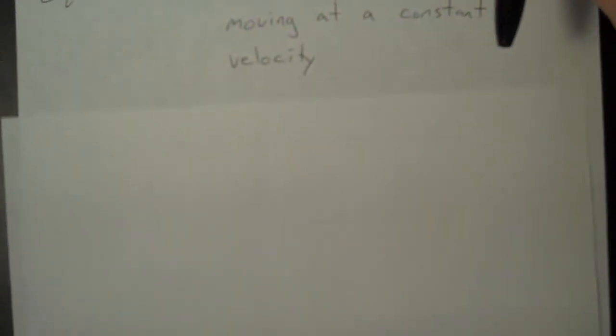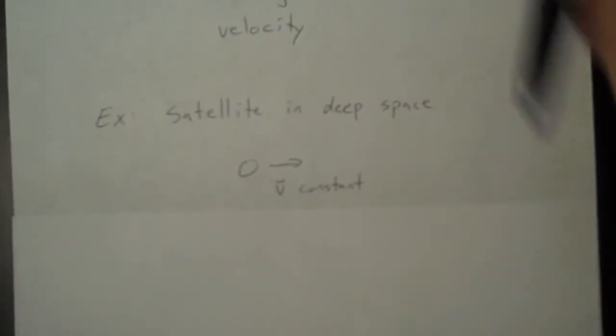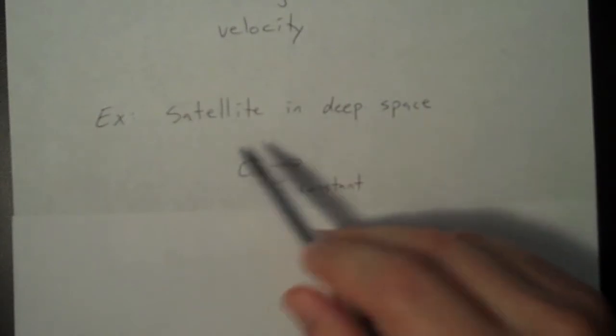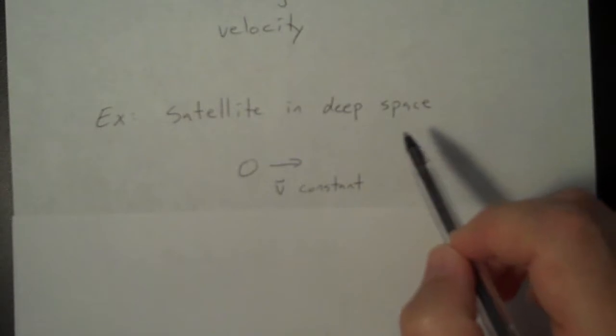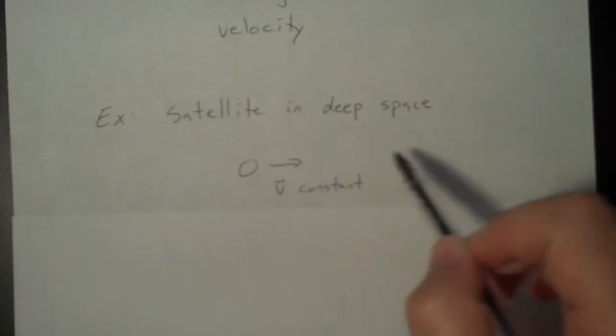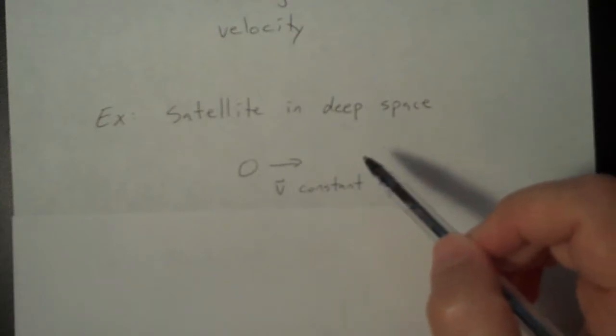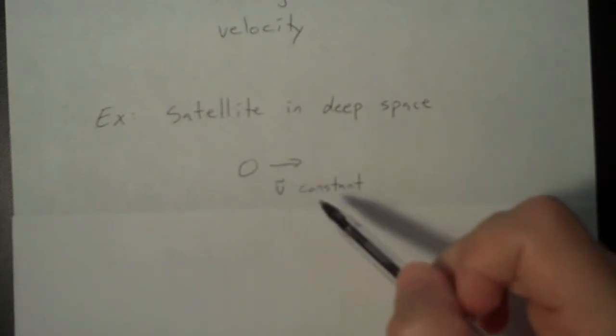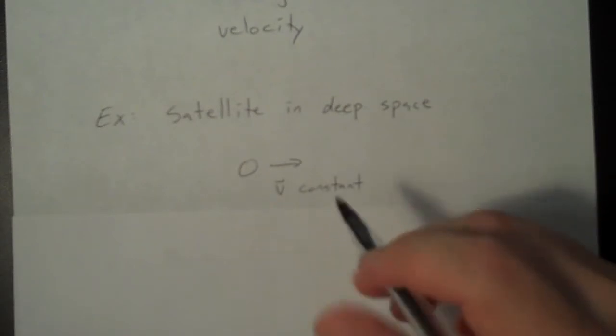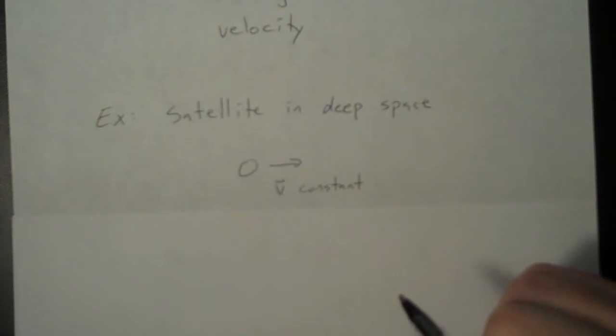Let's look at a few examples of that. So let's say you have a satellite moving in deep space. So there's no more engines running on this ship. It's just moving on a straight line path. And since it's in deep space, there's no gravitational forces. So that object is going to maintain a constant velocity. There are no forces on it, and so it is in equilibrium.